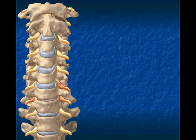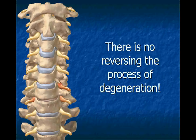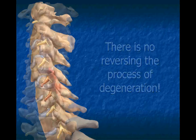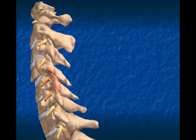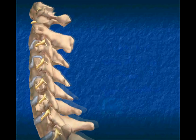Once a disc has begun to degenerate, there is no reversing the process. Therefore, it is important to improve the alignment of the cervical vertebrae to help prevent the advancement or worsening of disc degeneration.